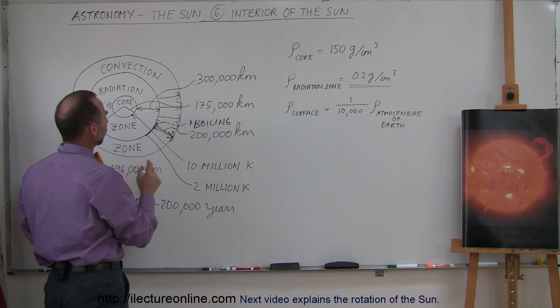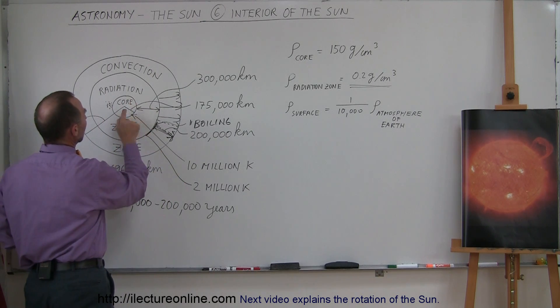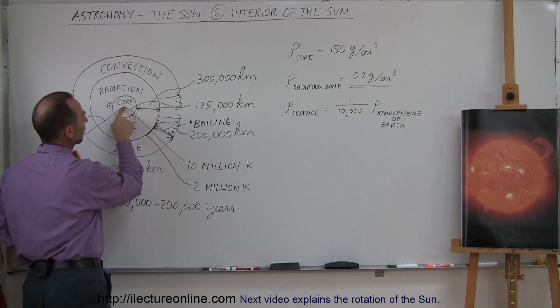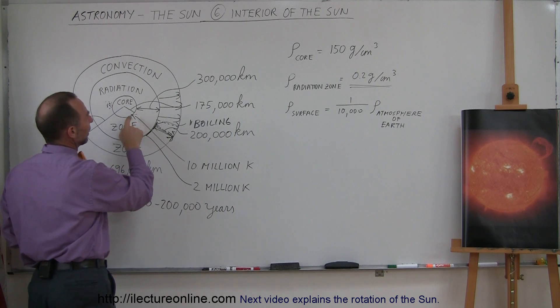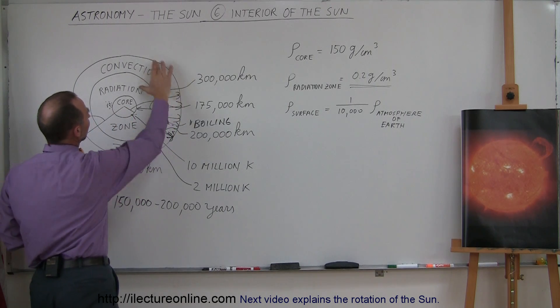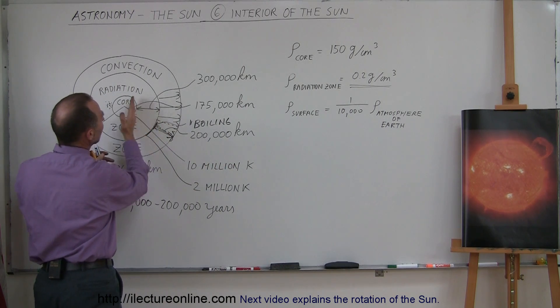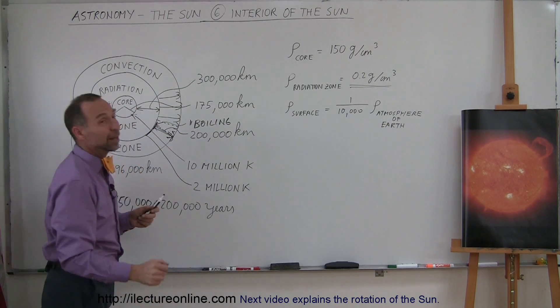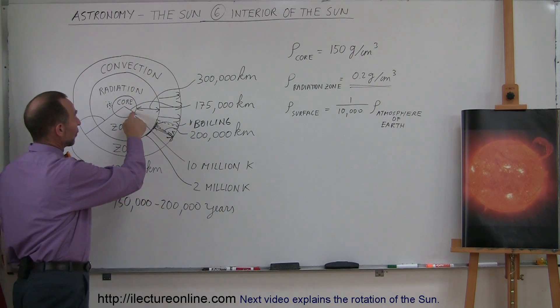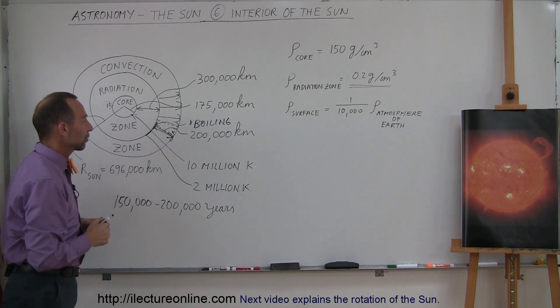So, the core is about 175,000 kilometers out from the center of the Sun. Then the convection zone is about 200,000 kilometers thick, and the region between the two, the radiation zone, is about 300,000 kilometers in radius. So, from the core out to the convection zone.